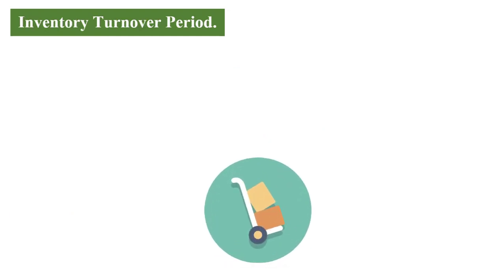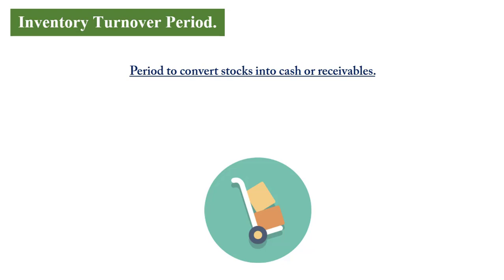The inventory turnover period looks at how long it takes for items bought with the intention of reselling to actually be sold and generate cash. A business primarily exists to trade — buying core products, selling to customers, getting cash, and rolling it back into inventory. If you can sell your products faster, more money comes in and you generate more returns. For example, if you sell inventory every month and generate a profit of $1,000 each time, within a year you sell twelve times, earning $12,000.